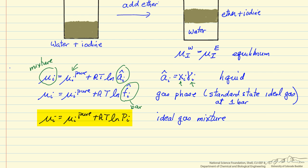And if it were an ideal gas mixture, then we can replace the fugacity by the partial pressure. So this is the partial pressure of species i, and you can see the chemical potential depends on the log of the pressure.